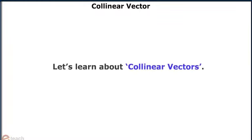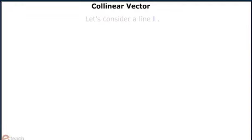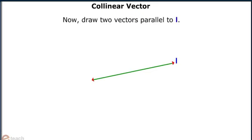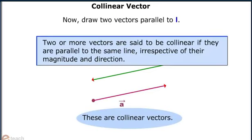Let us learn about collinear vectors. Consider a line L and draw two parallel vectors. Two or more vectors are said to be collinear if they are parallel to the same line, irrespective of their magnitude and direction.